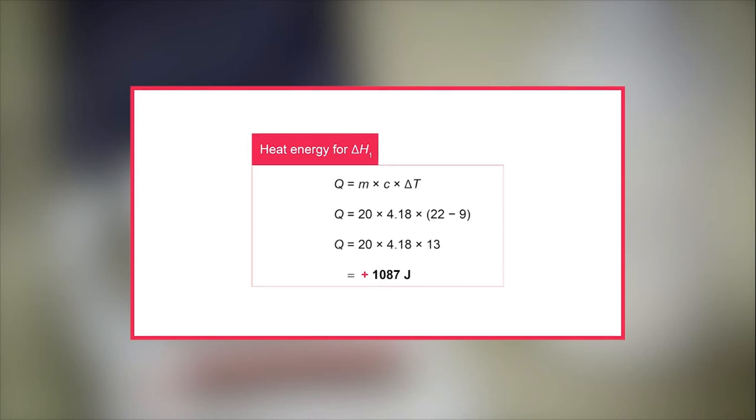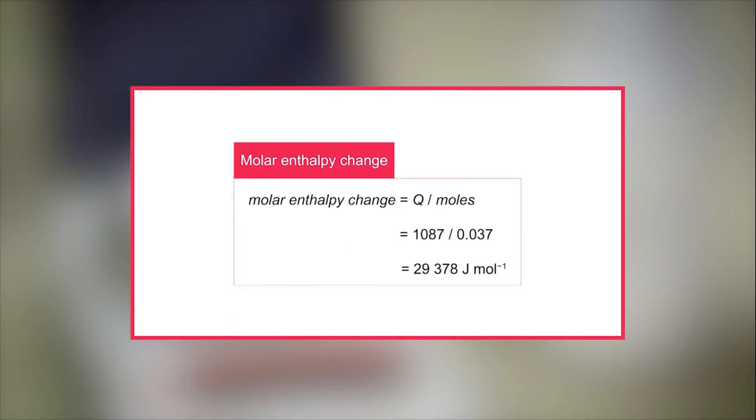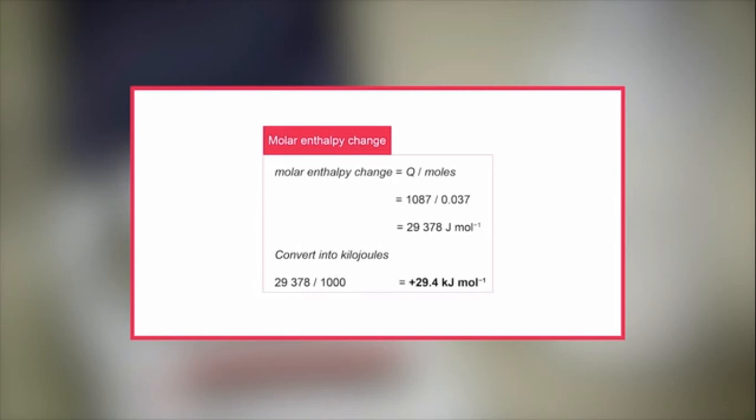Enthalpy values are always quoted as molar enthalpy values, so it is necessary to calculate the molar enthalpy change. To do this, the number of moles of potassium hydrogen carbonate used in this experiment are calculated. To find the molar enthalpy change, the heat energy calculated earlier for delta H1 is divided by the number of moles for potassium hydrogen carbonate. Enthalpies are expressed in kilojoules per mole. The number of joules per mole is therefore divided by 1000, giving the answer in kilojoules per mole.